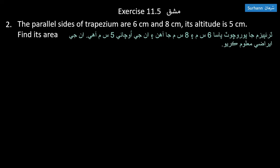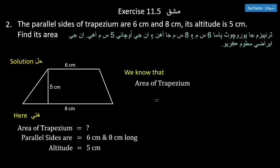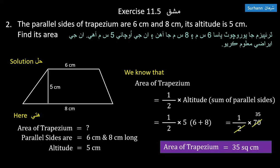Part four: the parallel sides of trapezium are 6 centimeters and 8 centimeters, and its altitude is 5 centimeters. Find its area. Using the area formula, area equals one-half times 5 times (6 + 8) which equals 35 square centimeters.